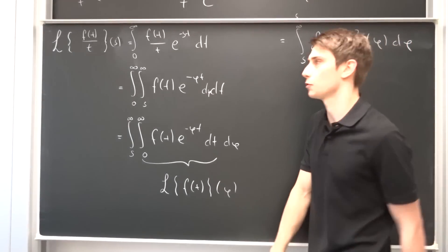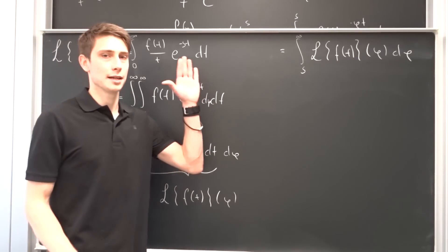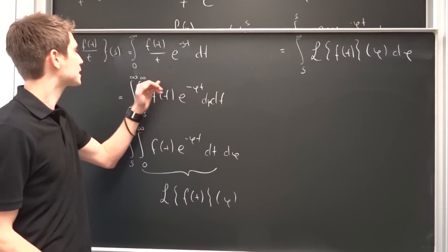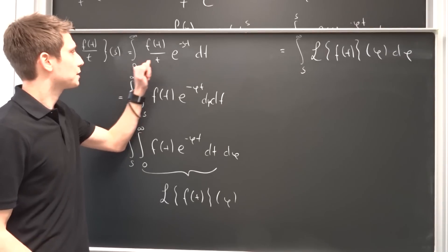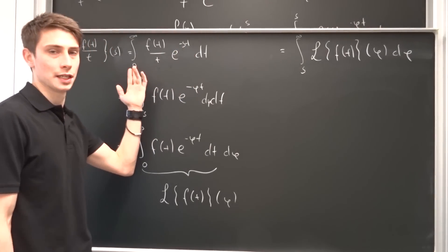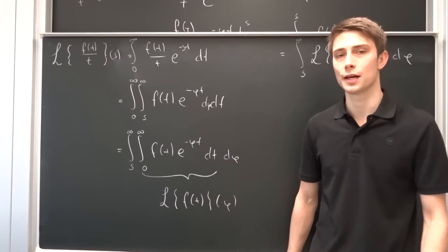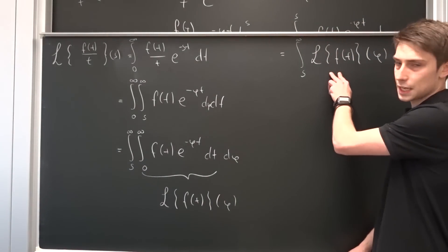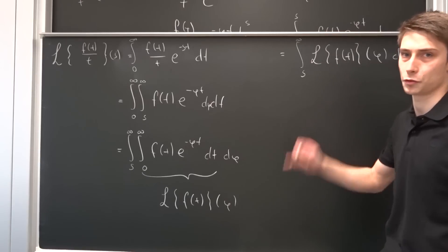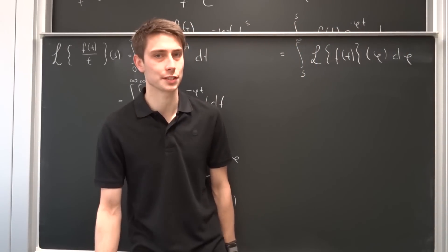So let's rewrite this. This is now the integral from s to infinity of the Laplace transform of f(t), in terms of φ, dφ. And we are basically done with this new identity. Notice that if we let s approach zero on both sides, then e to the 0 is 1, and we only get the improper integral from 0 to infinity of f(t) over t dt, which equals the integral from 0 to infinity of the Laplace transform of f(t) in terms of φ, dφ. We are going to use this fact in the next video.